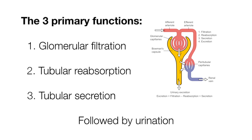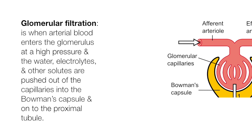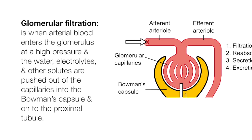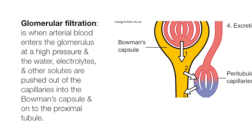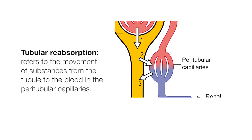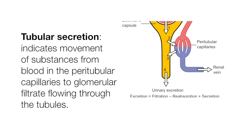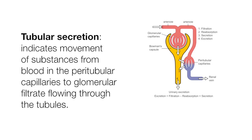The nephron has three primary functions: glomerular filtration, tubular reabsorption, tubular secretion, and urinary excretion. Glomerular filtration is when arterial blood enters the glomerulus at high pressure and water, electrolytes, and other solutes are pushed out of the capillaries into the Bowman's capsule and onto the proximal tubule. Tubular reabsorption refers to the movement of substances from the tubule to the blood in the peritubular capillaries. Tubular secretion indicates movement of substances from blood in the peritubular capillaries to glomerular filtrate flowing through the tubules.